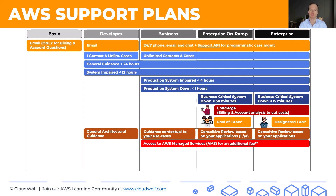In the Business, Enterprise on Ramp, and Enterprise plans, you also get access to AWS Managed Services (AMS) for an additional fee. AMS essentially lets you augment your existing team with AWS-side resources — a cloud service delivery manager, a cloud architect, and AMS security access — though they're not your employees. This is something that actually came up on the exam.